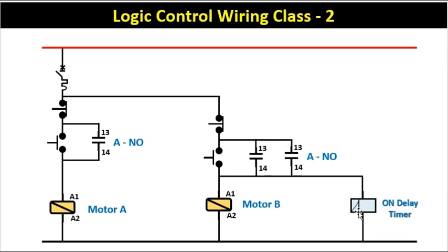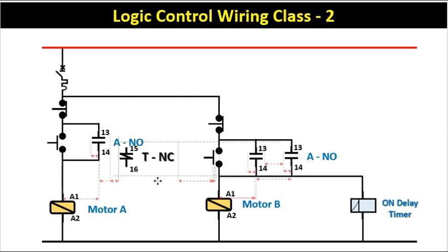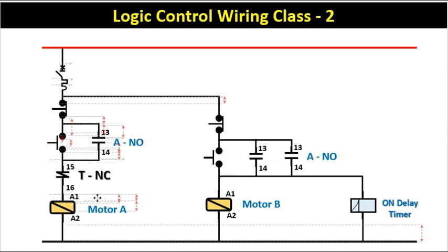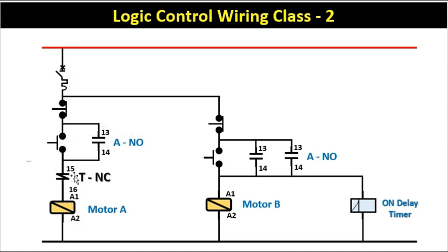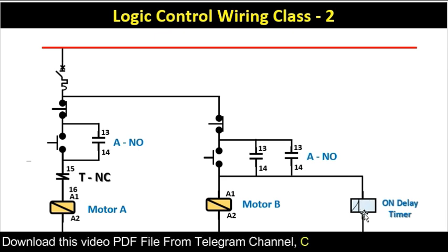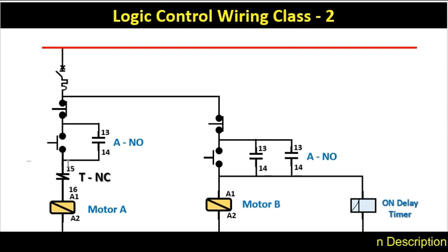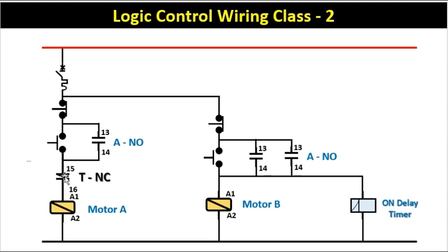In this timer, there is an NC contact. We use this NC contact to turn off motor A — we connect it in series to motor A. The advantage is that when the timer's set time is completed, the contact changes. When the NC contact changes to NO, power supply flowing through motor A's circuit will break, and motor A will turn off automatically.